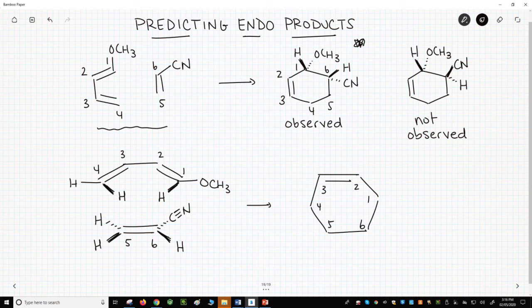Number our carbons in the ring. Let's now recopy all the up groups. Those are hydrogens for 1, C1, C4, C5, and C6.